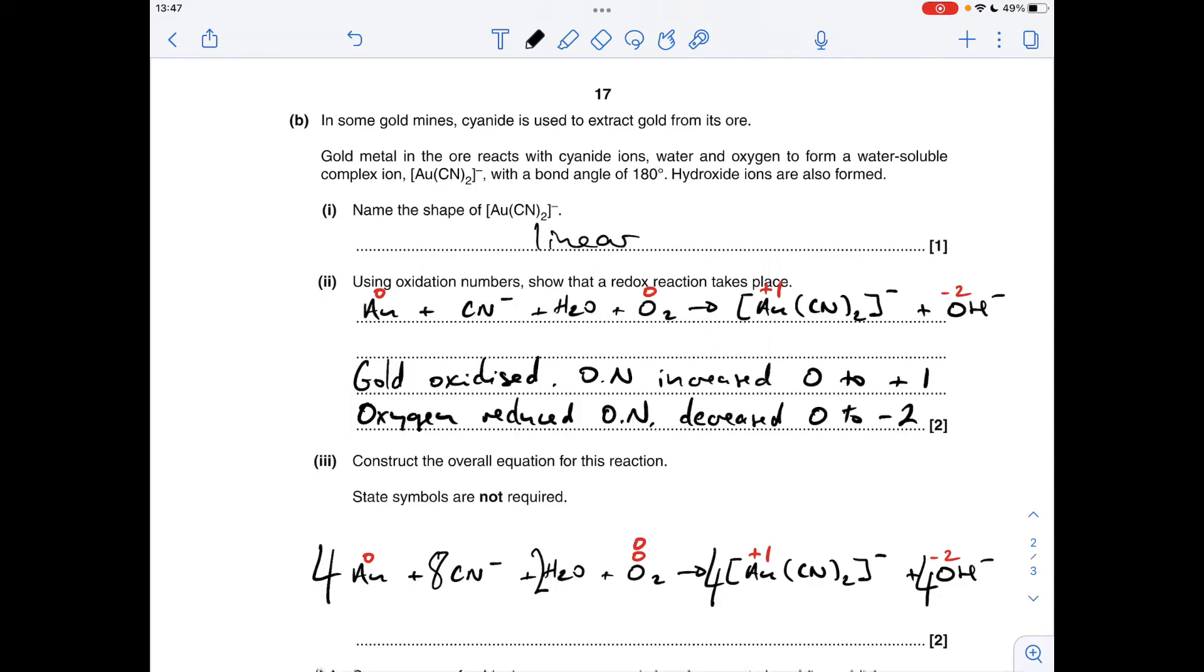Then we need to just finish off and do the H₂Os. We've got four H's on the right, there's only two on the left at the moment, so we need a two in front of the H₂O. Now just spend a couple of seconds explaining the overall oxidation number change for the oxygen, just for revision purposes.